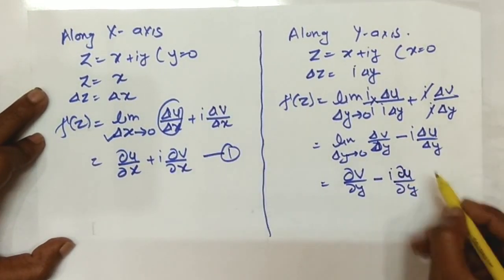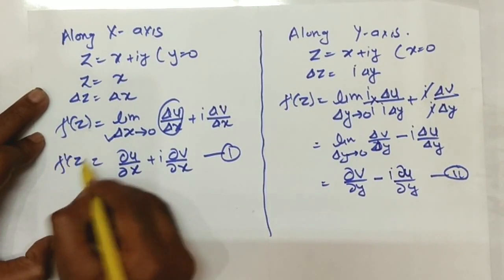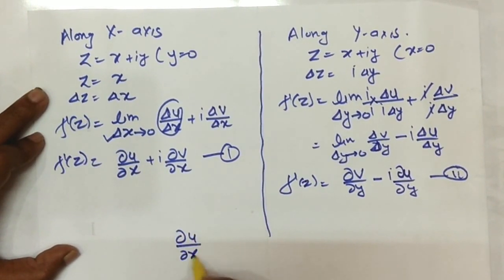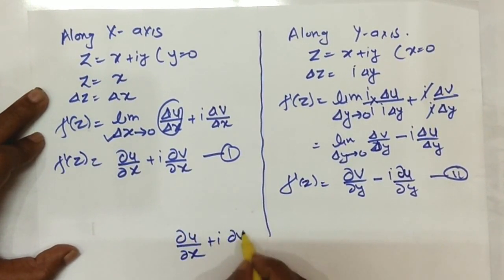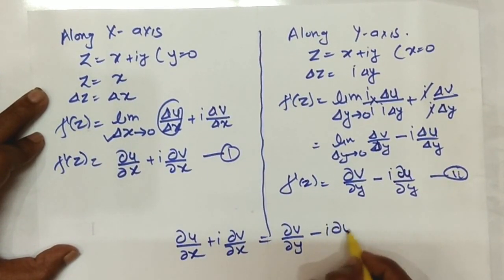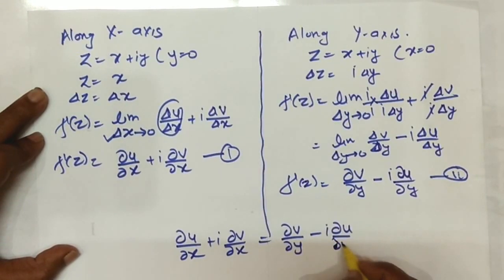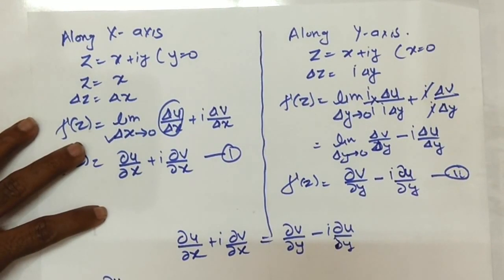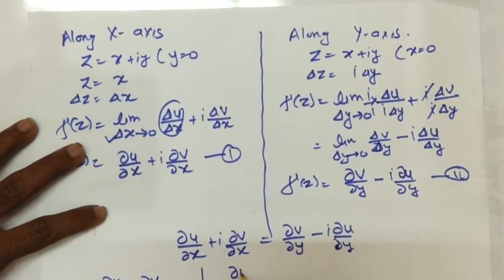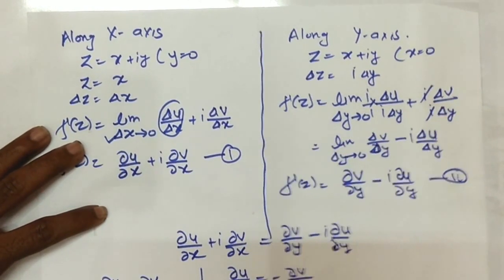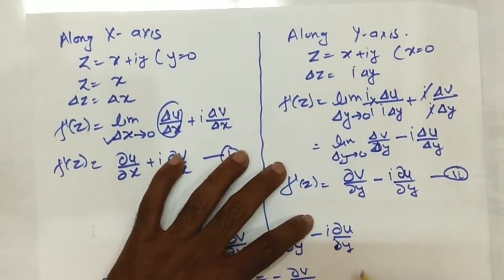From equations 1 and 2, both expressions equal f'(z), so we can equate them. Comparing real and imaginary parts, we get: ∂u/∂x = ∂v/∂y, and ∂u/∂y = −∂v/∂x. This is the Cauchy-Riemann equation.